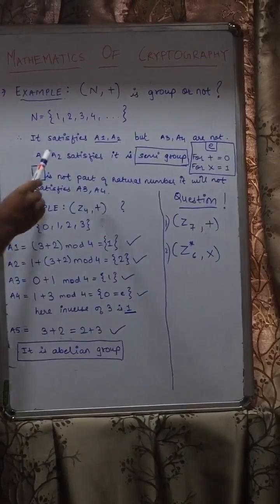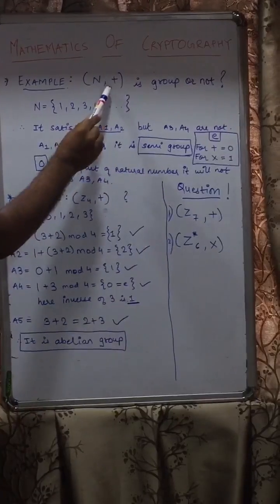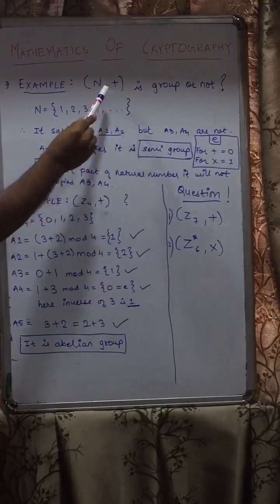So this will not satisfy A3 and A4 property. Therefore, as I mentioned earlier, if any group satisfies A1 and A2 property then it is known as a semi-group. So this example is not a group, it is a semi-group.